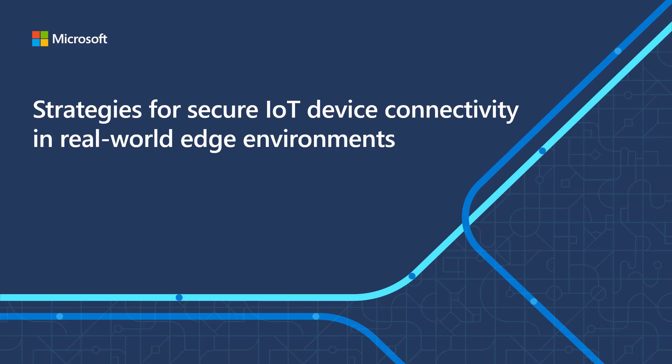We'll begin by addressing the elephant in the room when it comes to Internet of Things solutions — the concept of security. How do you enforce security in solutions that typically require the use of sensors in the real world, potentially in publicly accessible areas? It all begins at the device, but must also be addressed in the communication layer and within the cloud environment itself. We'll look at an overview on how Microsoft provides security for IoT solutions in each of these areas.